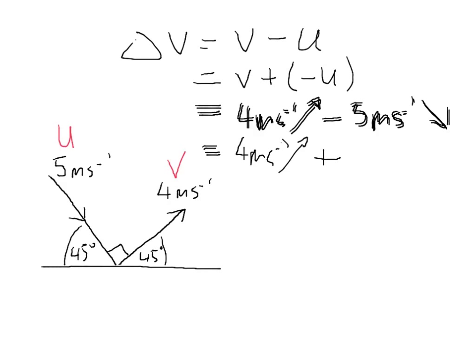But when you add the opposite of the initial, the opposite of the initial is still going to be 5 metres per second, but being opposite, it's going to be in the opposite direction.